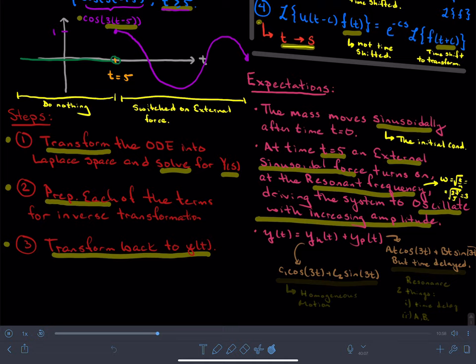And so, what would we really understand from the method of undetermined coefficients? Well, we understand that there's this homogeneous motion, which is purely sinusoidal.